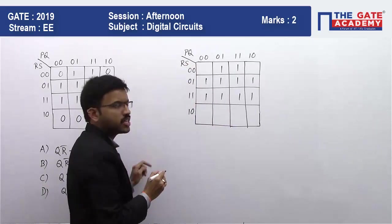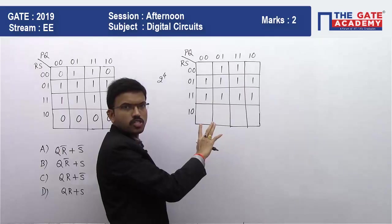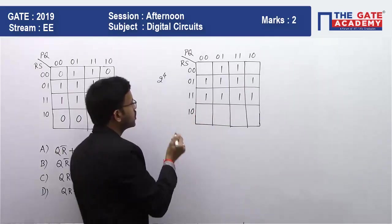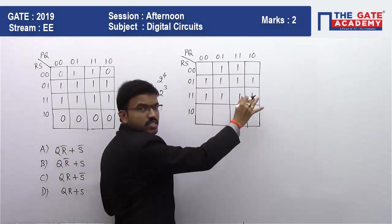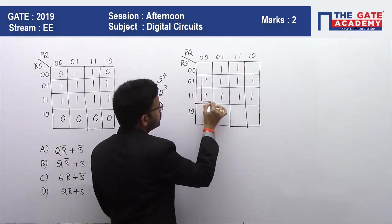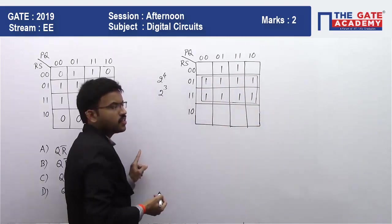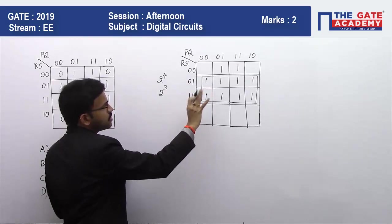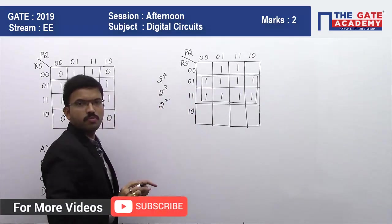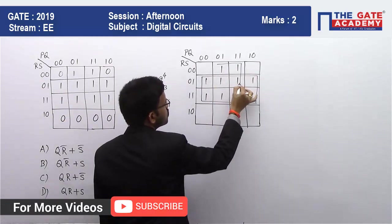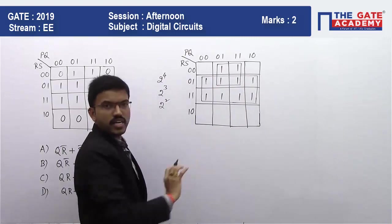This is a 4-variable K-map, so we start with 2 to the power 4. We check whether 16 adjacently placed 1s are possible — in this case, we do not have that combination. Then go for 2 cubed, that means 8 adjacently placed 1s. Here we have such a combination, so we do the grouping of these 8 ones. We do not have any other grouping of 8, so go for 2 squared — that means grouping of 4 adjacently placed 1s. We can do the grouping of these 4 ones. So we have only 2 groupings.